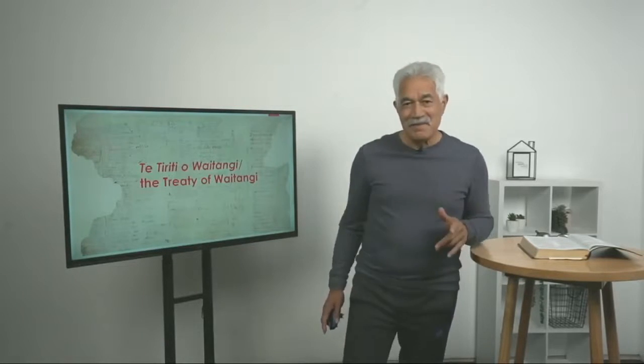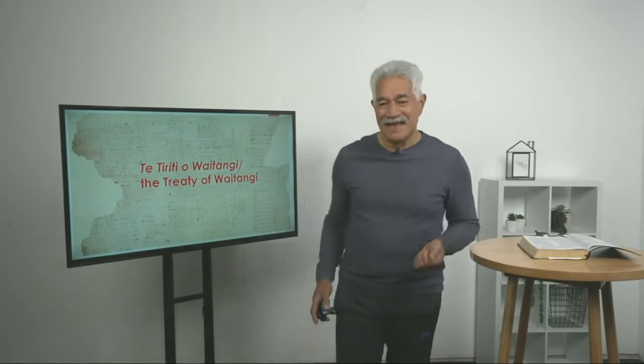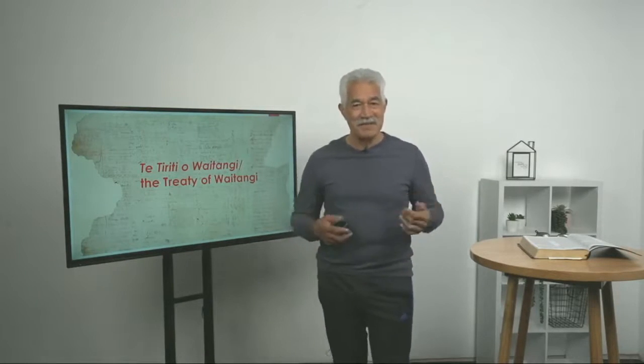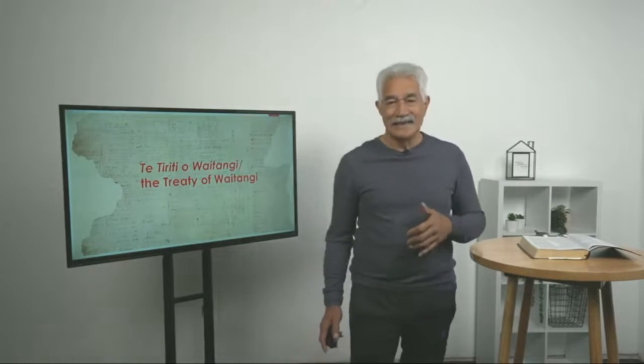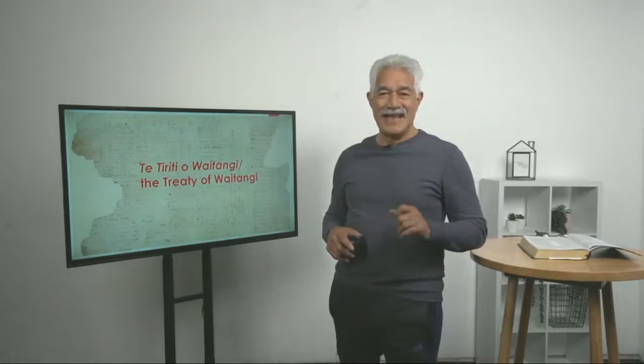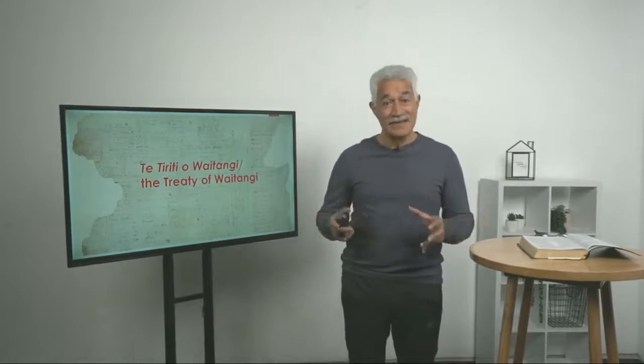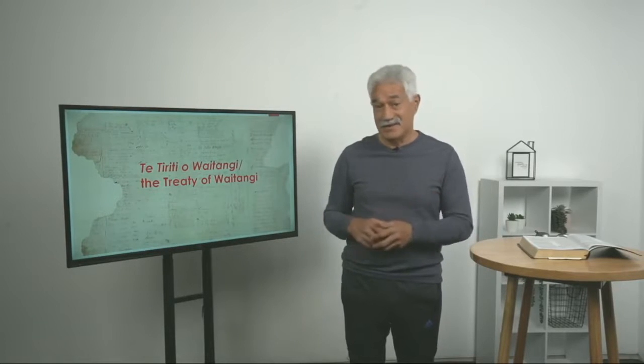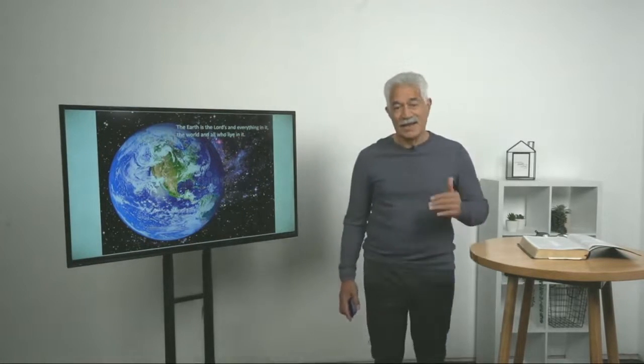Pass that over to Will now. Kia ora koutou katoa, haere mai, nau mai, kua tātou hui huinga a tēnei rā. Welcome everybody to our message today. And today we're going to be looking at Te Tiriti o Waitangi and the Treaty of Waitangi. So there's two different versions, one's Te Reo Māori and the other's in English. And we're going to be looking at some of the events that led to the signing of Te Tiriti o Waitangi. My name is Will Westrop and I'm one of the elders at Life Switch Church here. Just before I start, I'd like to pray.